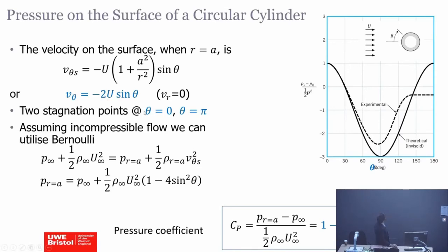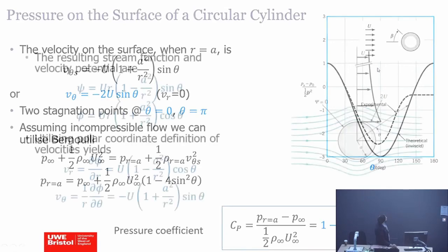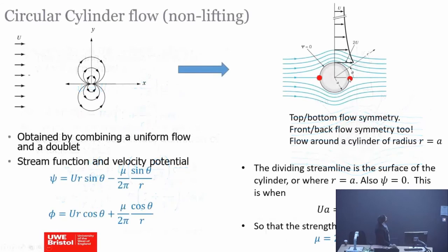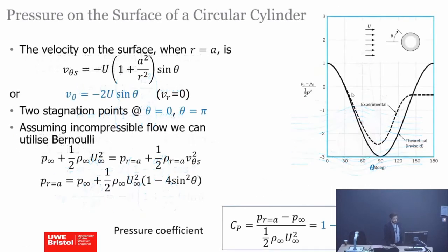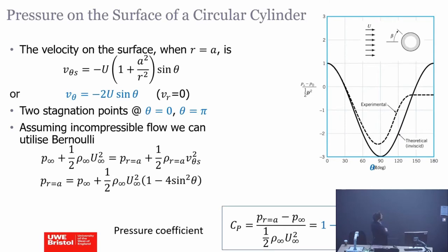We can show that the stagnation points are at theta equal to zero and theta equal to pi — one at the front, one at the back. Those are the two stagnation points. Remember, if we know psi and phi, we can derive the velocity components; from the velocity components we can know the pressures; and from the pressures we can calculate the forces. That is ultimately what we want. So let's do this for the circular cylinder.